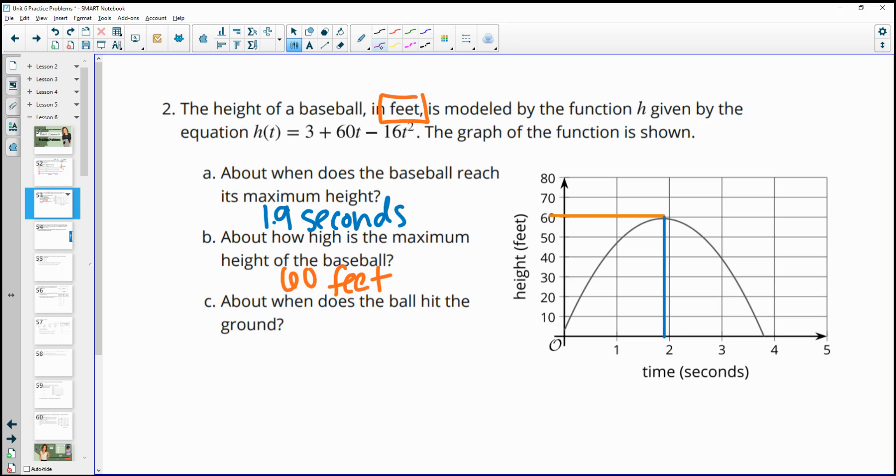And then it says, when does the ball hit the ground? So then here's the ball's path. It's traveling above the ground, above the ground, coming back down, down, down, down, down, down until it hits the ground. And so that looks like maybe 3.8 seconds.